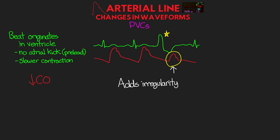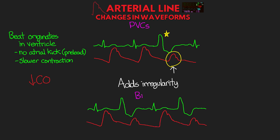A variation of this is when our patients are in bigeminy — essentially when we have alternating normal beats with PVCs. As described, we are going to see that reduction in the waveform with each one of those PVCs. So in bigeminy, you're going to see an alternating pattern of high and low pressure tracings as shown here.